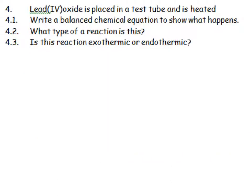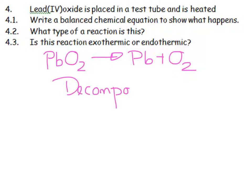Lead oxide is placed in a test tube and heated. PbO2 decomposes into lead and oxygen. Write a balanced chemical equation to show what is going to happen. What type of a reaction is this? It's a decomposition. And is it exothermic or endothermic? I'm having to add heat all the time. I have to keep it heated. It's going to be an endothermic reaction. It's taking heat in all the time. Endo, taking heat in. Decomposition.